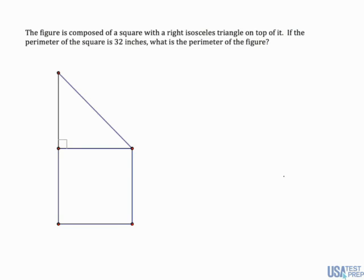So I need to figure out the perimeter of this composite figure, but I don't know any of the side lengths. What I do know is that the perimeter of the square is 32 inches. Well, what do I know about a square? A square has four congruent sides, so this side is congruent to this side, which is congruent to this side, which is congruent to this side.